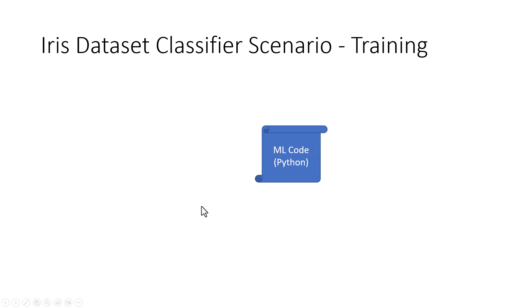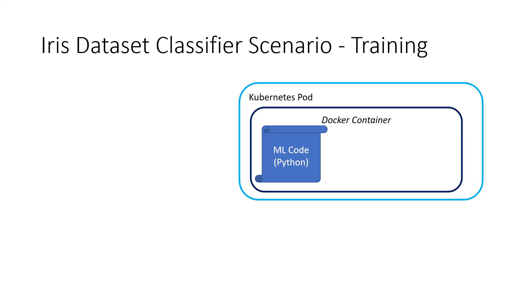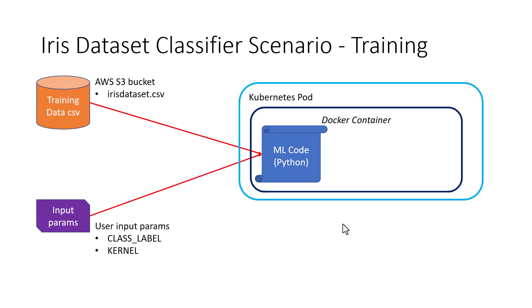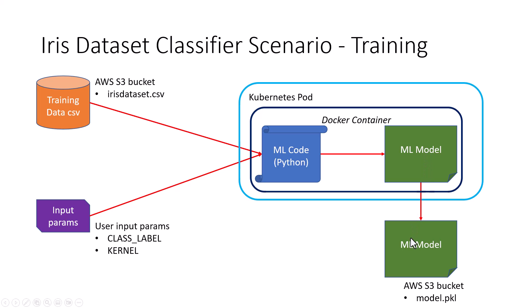Let's quickly look at the training flow. We start with the machine learning code in Python, which is going to use the scikit-learn library to train the model. While scikit-learn already comes with the iris dataset, for illustrative purposes, we are going to read this data from an AWS S3 bucket. We'll also have two input parameters for our machine learning code: the class label and the kernel. Once execution is complete, the model is created and we copy it to the AWS S3 bucket, which concludes our training phase.